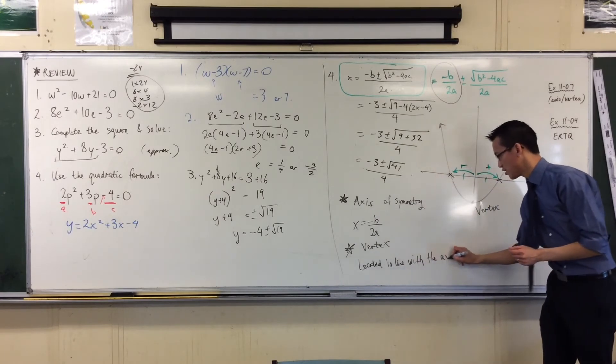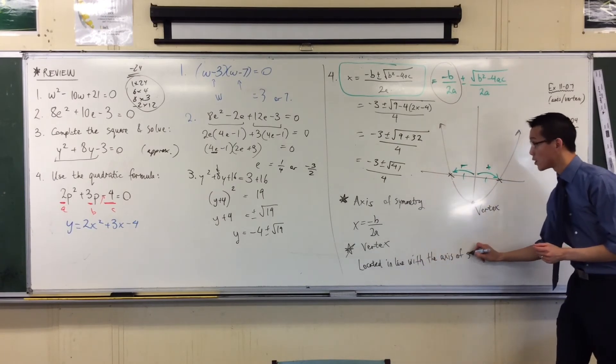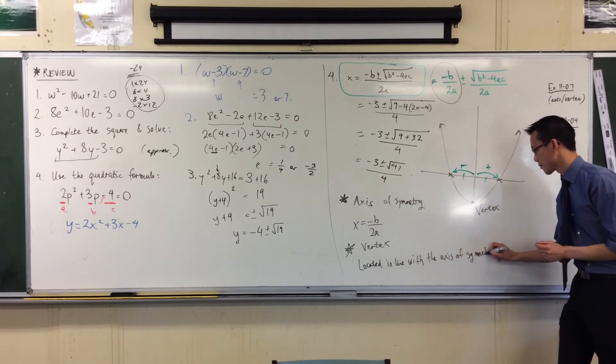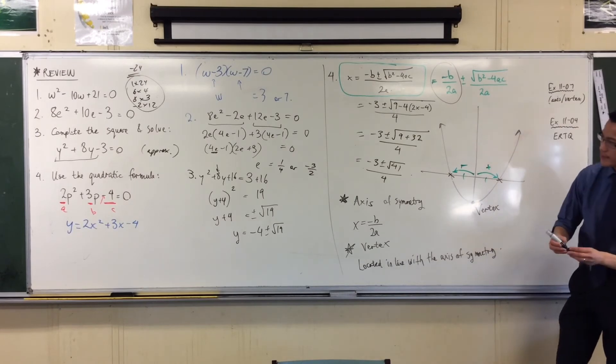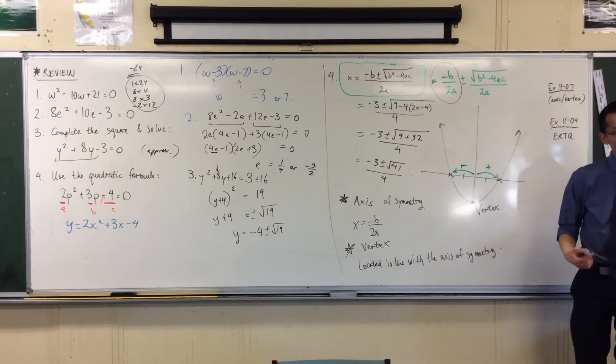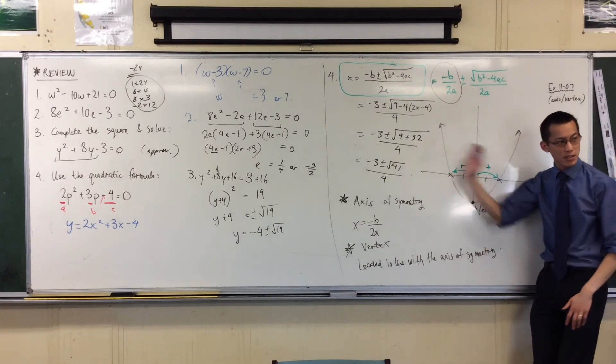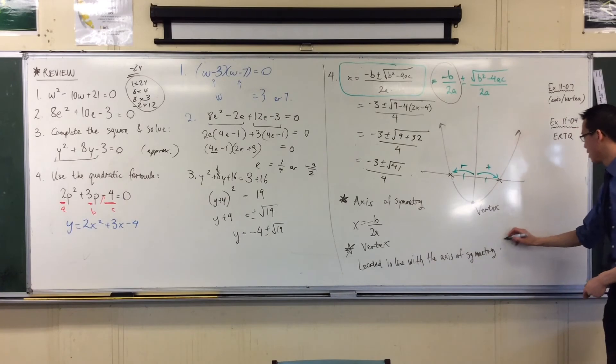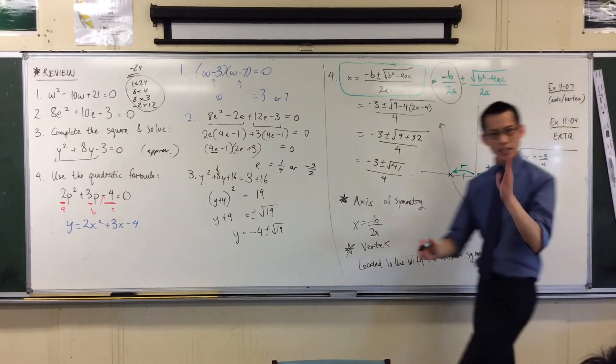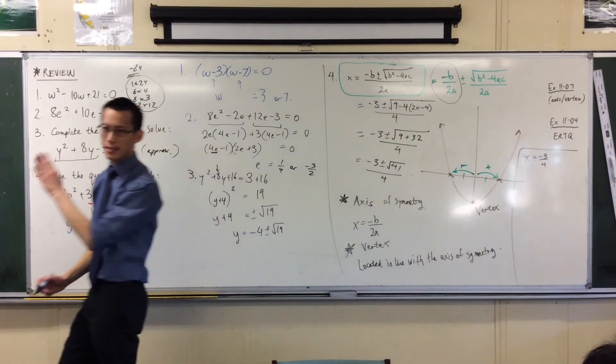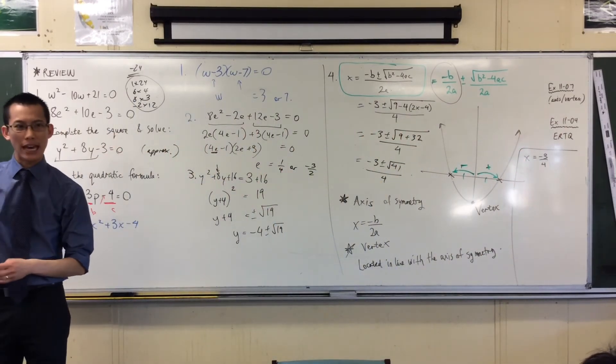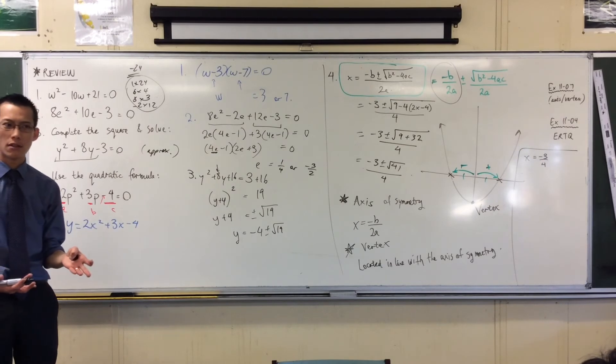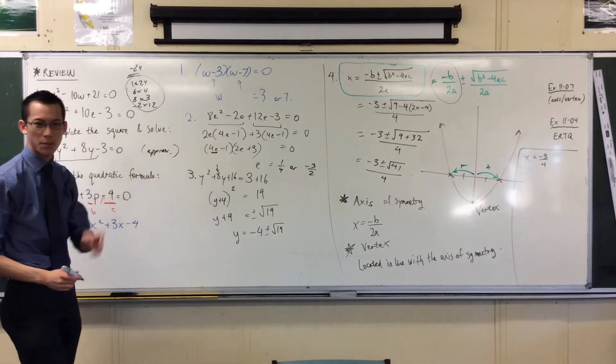So, for instance, let's actually do it with this question that we've just done, question 4. If I wanted to know where the axis of symmetry is, horizontally, I'm going to be at x equals minus 3 quarters. I will just have enough space over here. x equals minus 3 quarters. That tells me where it is left and right, but it doesn't tell me where it is up or down. I need a y value.